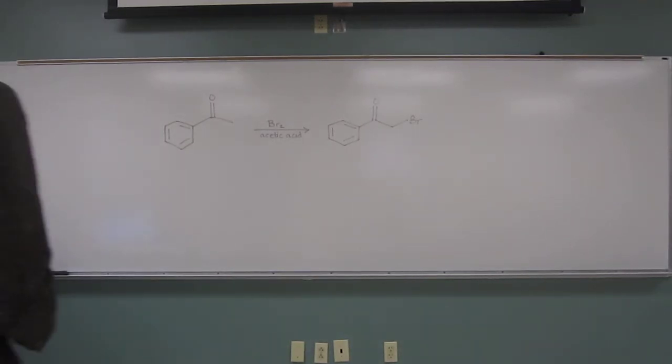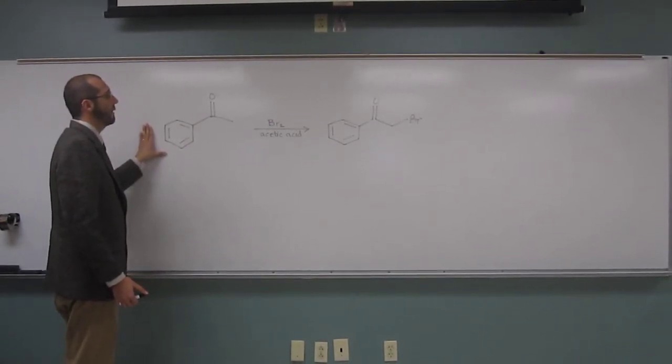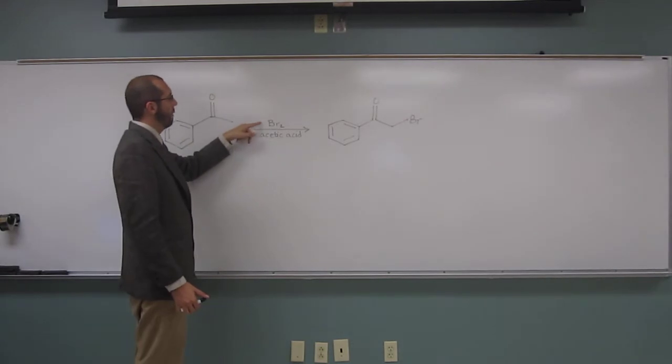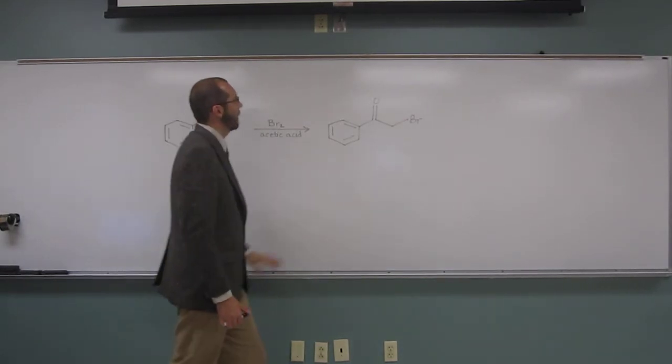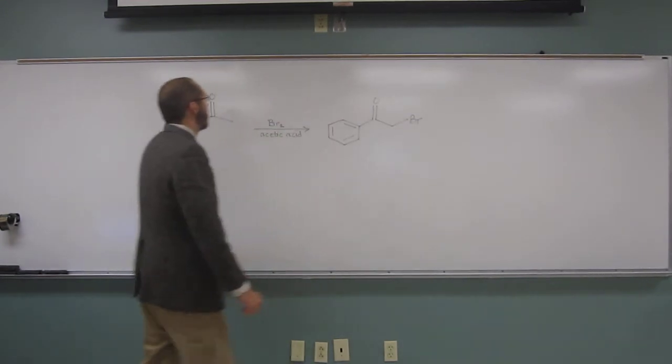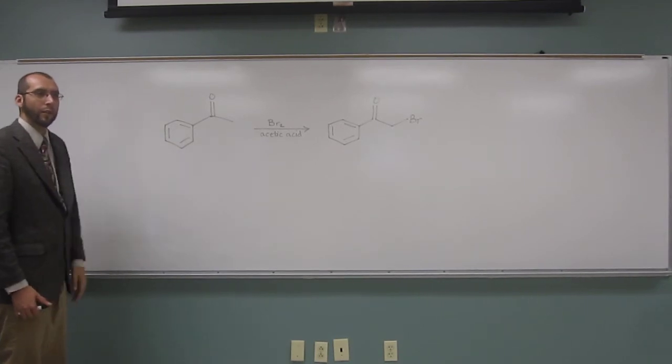So here we've got this ketone, methylphenyl ketone, and we're reacting it with bromine in a solution of acetic acid, and we get this product here, the alpha-bromine. Okay, so what we're going to do is draw the mechanism of this reaction.